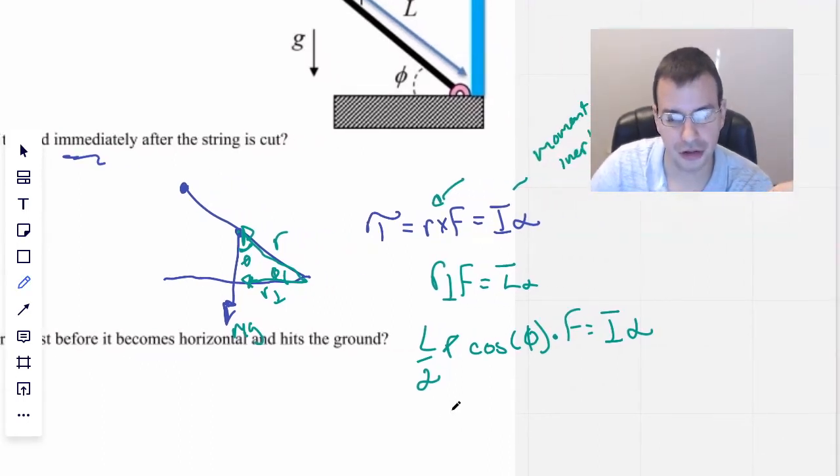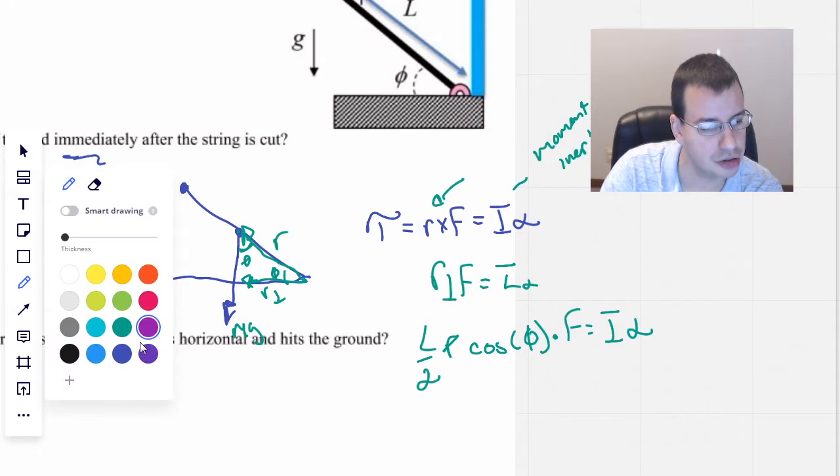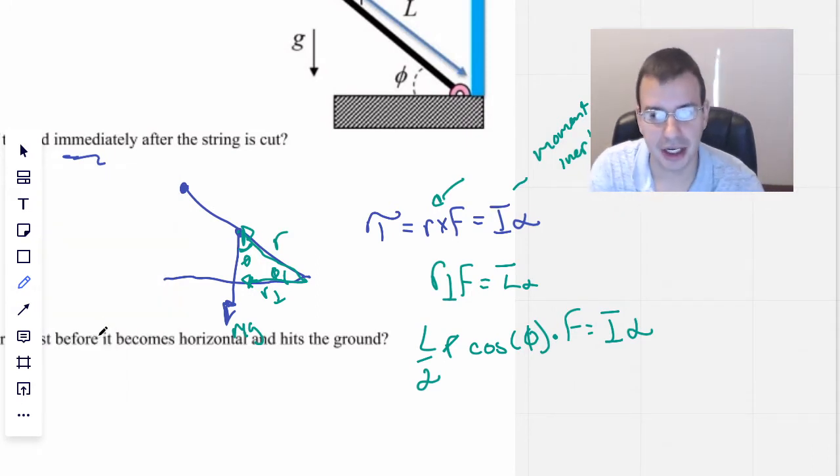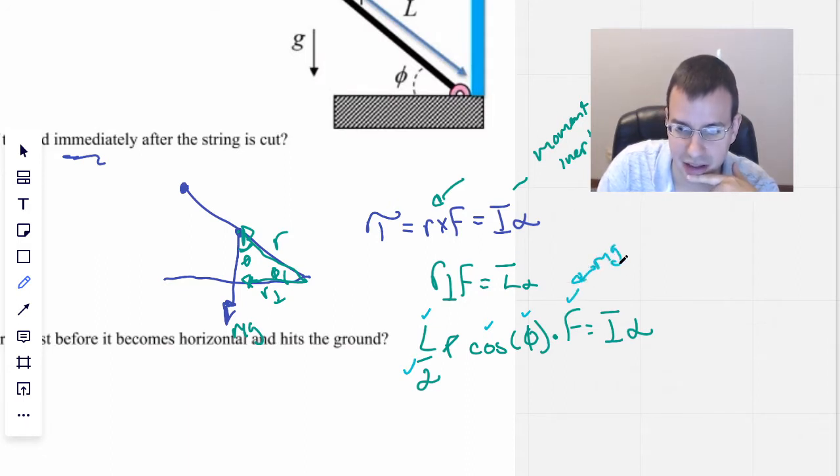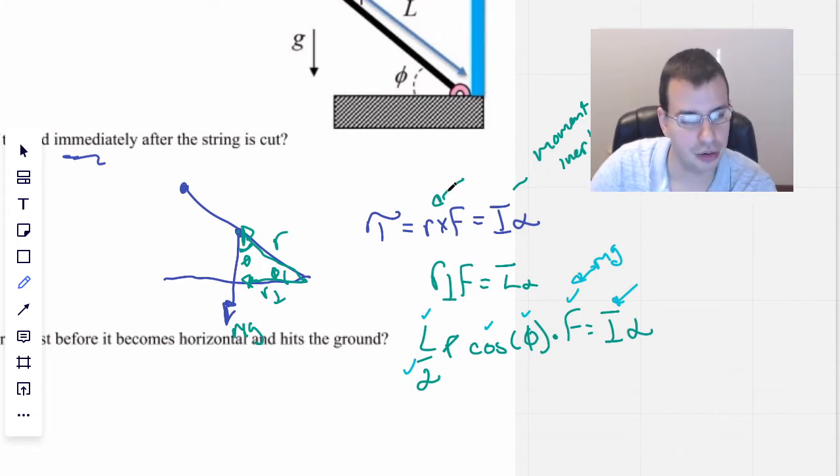90% of these angle problems are all in the setup. We know what L is, we know what 2 is, we know what cosine is, we know what phi is, we know what force is - that's mass times gravity. We can figure out what I is. So let's go to the Wikipedia.